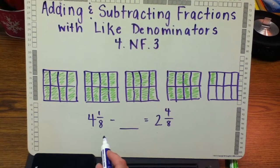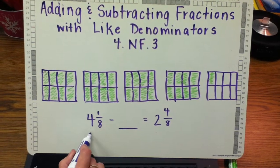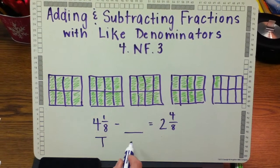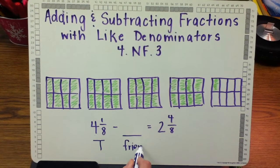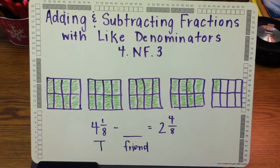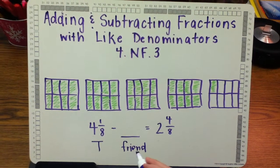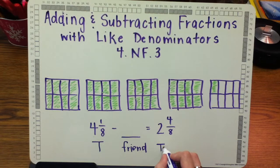I've represented that problem here. Trevor has the four and one-eighths pizzas. Then he gives some to his friend. And now, after giving some to his friend, this is what Trevor has.